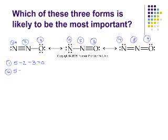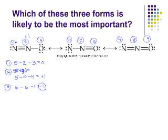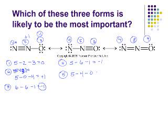For nitrogen number two: five valence electrons minus zero lone pair electrons minus four bonds — nitrogen two has a formal charge of plus one. Atom number three is an oxygen: six valence electrons minus six lone pair electrons minus one bond equals minus one. Atom number four is a nitrogen: five valence electrons minus six lone pair electrons minus one bond — formal charge of minus one. Atom number five is also a nitrogen: five valence electrons minus four bonds minus zero lone pair electrons equals plus one.